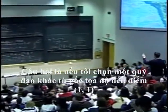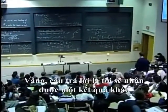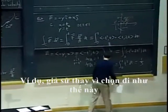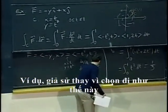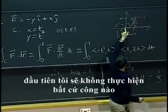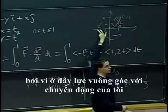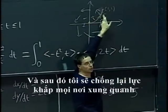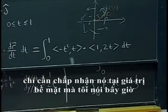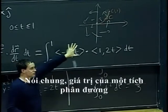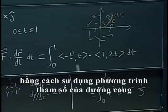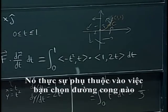The question is: if I took a different trajectory from the origin to the point (1,1), what would happen? The answer is I would get something different. For example, if I chose to go a different way, first I wouldn't do any work because the force is perpendicular to my motion, and then I would be going against the force all the way around, so I should get something negative. The value of a line integral in general depends on how we got from point A to point B, and that's why we have to compute it by using the parametric equation for the curve.